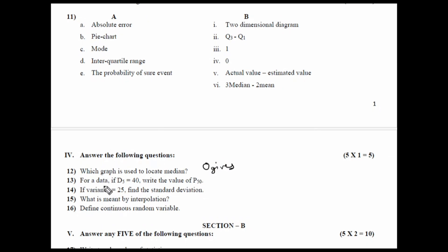Thirteenth question is, for a data, if D5 is equal to 40, write the value of P50. Your fifth decile is equal to median is equal to second quartile is equal to fifth quartile. That is also equal to 50th percentile. So, that is equal to 40. Therefore, if fifth decile is 40, then 50th percentile will also be 40. The answer is 40.